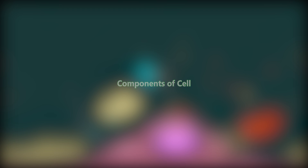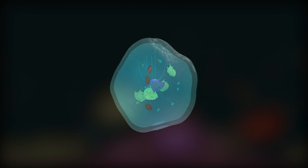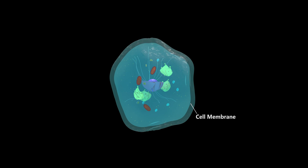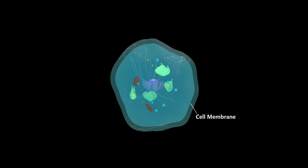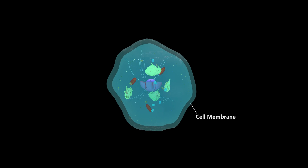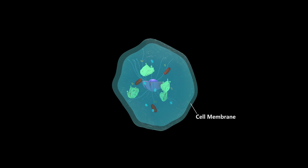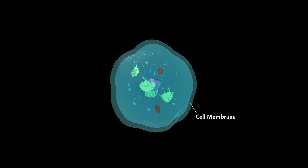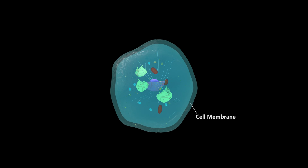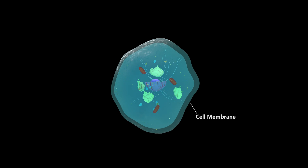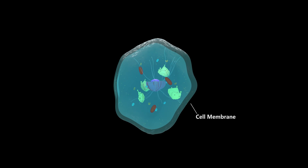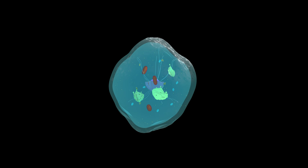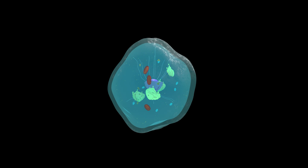Components of the cell. Cells are the smallest living unit of an organism. All cells have three things in common. No matter what type of cell they are, all cells have a cell membrane which separates the inside of the cell from its environment.